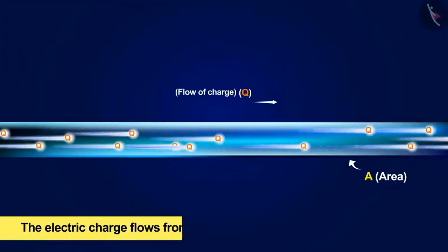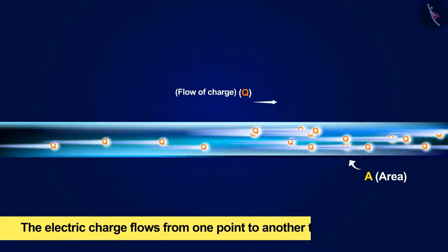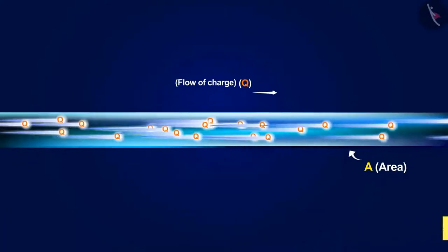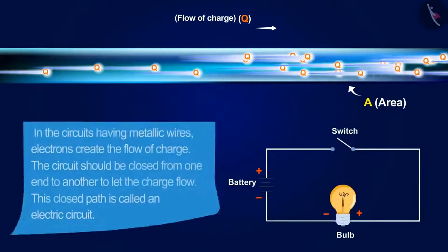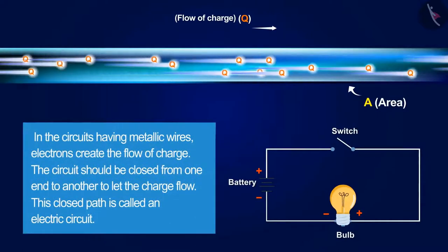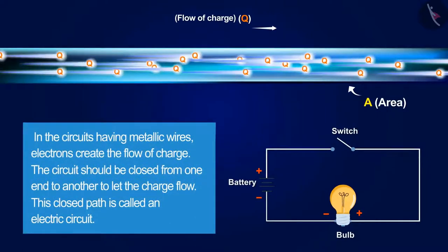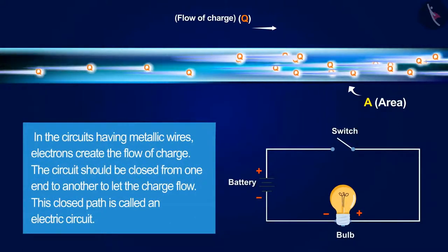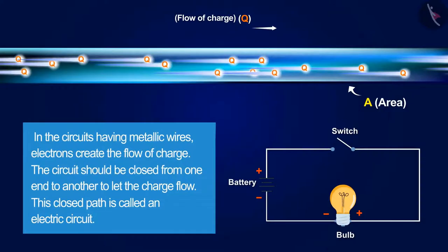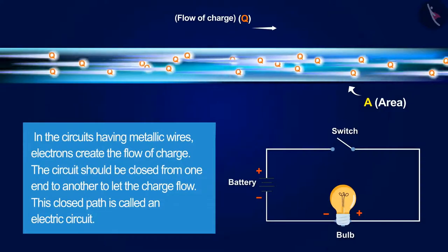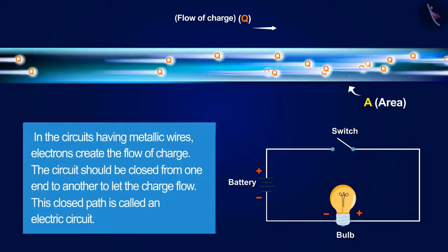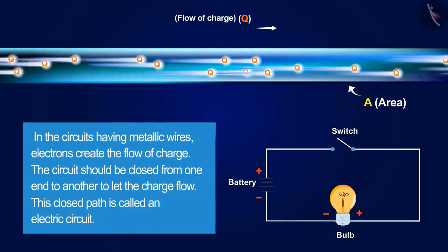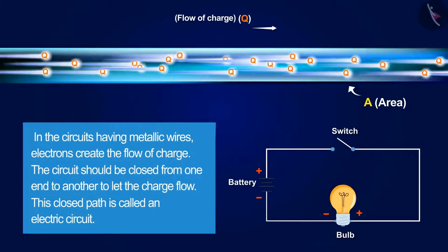The electric charge flows from one point to another through metallic wires. In circuits having metallic wires, electrons create the flow of charge. The circuit should be closed from one end to another to let the charge flow — this closed path is called an electric circuit.